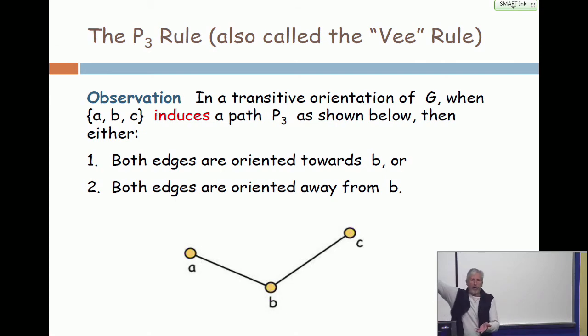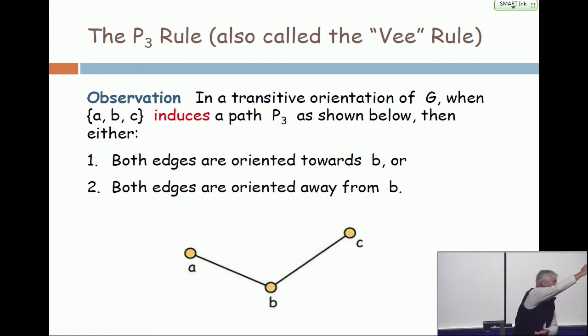Watch my hand waving. Here's a V. If I orient this edge towards B and this edge away from B, I have A to B and B to C. What does the transitive property require? It requires that there is an edge up here. It also requires that that edge be oriented from A to C, but for starters, the edge has to be there. So when you have a V, there is no edge.